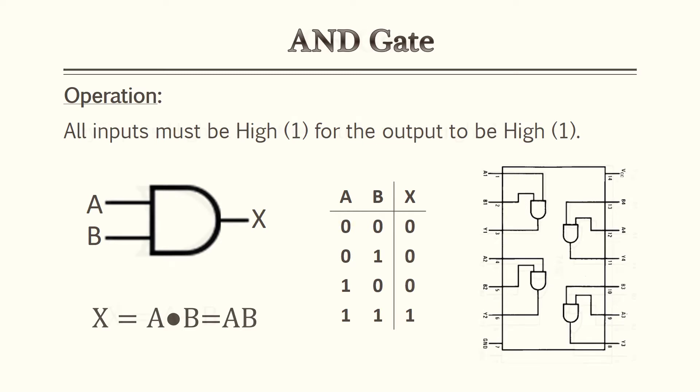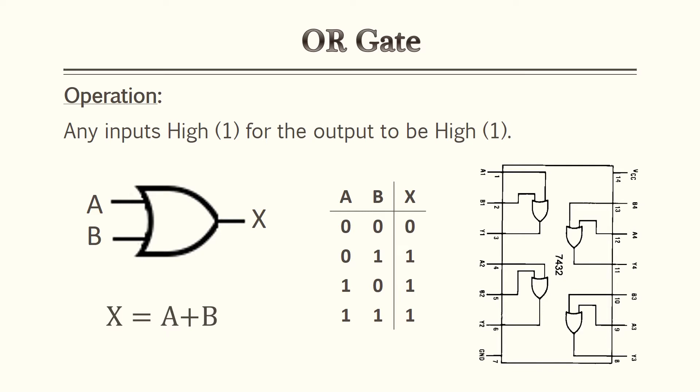The OR gate is one of the simpler ones to remember. If any of the inputs are high, the output is high — all you need is one input to be a 1 for your output to be a 1, hence the term OR. If A is high or B is high, then your output is high. In Boolean algebra, the OR gate is symbolized by a plus sign, so A plus B is the equivalent of an OR gate. Your textbooks will usually show a two-input truth table.